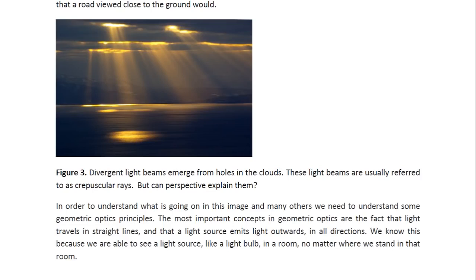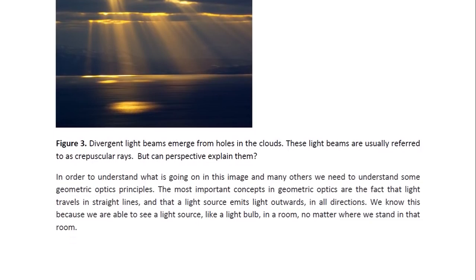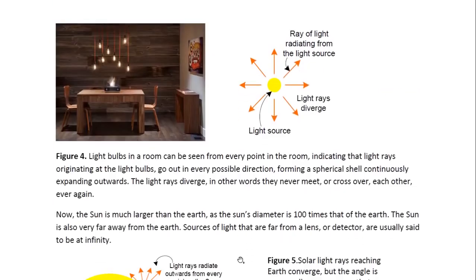We know this because we are able to see a light source, like a light bulb in a room, no matter where we stand in that room. Here we see a photograph of a room with several light sources that look like light bulbs. We know that wherever we stand in the room, we will be able to see the light coming from these light bulbs — from the front, from either side, or from behind the table. So that shows us that these light bulbs are emitting light in all directions, as illustrated here.